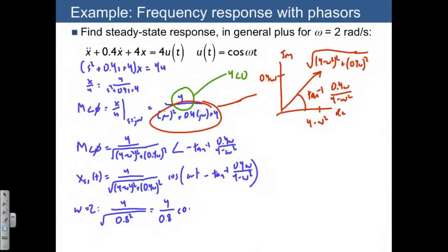This is multiplied by the cosine of 2t. And then we need to evaluate what this arctangent is going to be equal to. Well, this is the arctangent of 0.4 omega divided by 4 minus 4. This is actually 0. So that means that our arctangent is actually evaluated at a special value. This is going to be equal to 90 degrees.